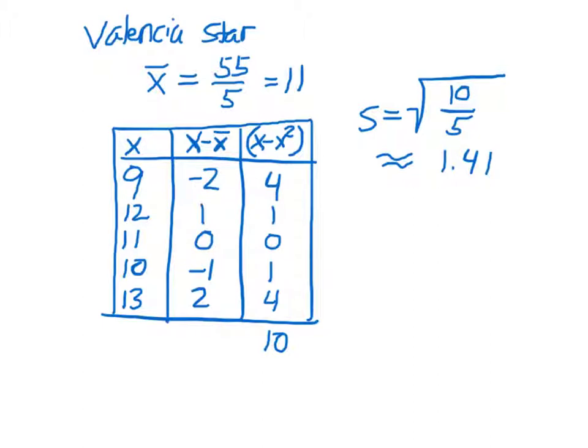So remember, for the other wholesaler, we had a mean of 10 and a standard deviation of approximately 4.38. And what this tells us is that on average, using the means, Valencia Star supplied oranges with more blemishes, right? But there was less variability, less variability in the data. And that's really what the standard deviation is telling us. There's less variability, so while on average there was one more blemish, the overall sample sizes were less variable than the Sunblessed wholesaler.